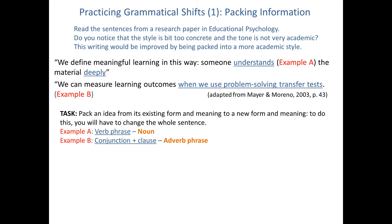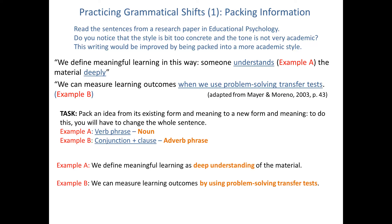This writing would be improved by being packed, and we're going to show you how with examples A and B. The task is to pack an idea from an existing form and meaning to a new form and meaning — to do this you'll have to change the whole sentence. For example A, we see the verb 'understand' — we'd like you to pack this into a noun. For example B, we see a conjunction 'when' and a clause — we use 'problem solving transfer tests' to pack this into an adverb phrase. Deep understanding is a noun group that is a packing of 'understands deeply.'